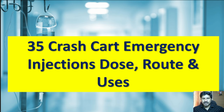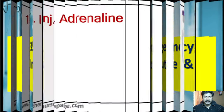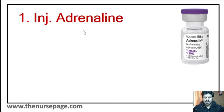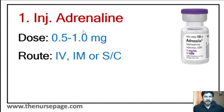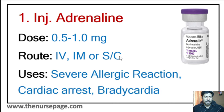35 crash cart emergency injection dose, route, and uses. First medication is injection adrenaline. Dose is 0.5 to 1 milligram. Route of administration includes intravenous, intramuscular, and subcutaneous. Common emergency uses include severe allergic reactions, anaphylactic reactions, cardiac arrest, and bradycardia.